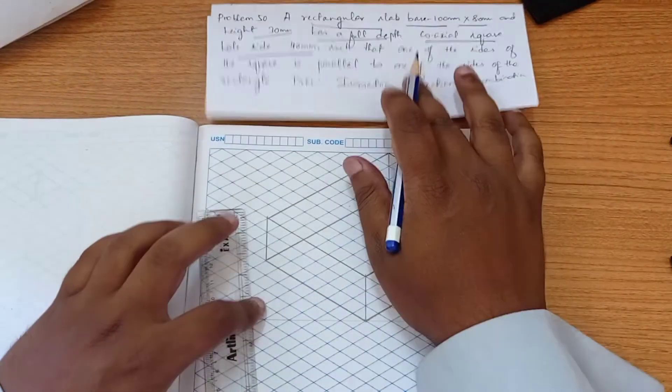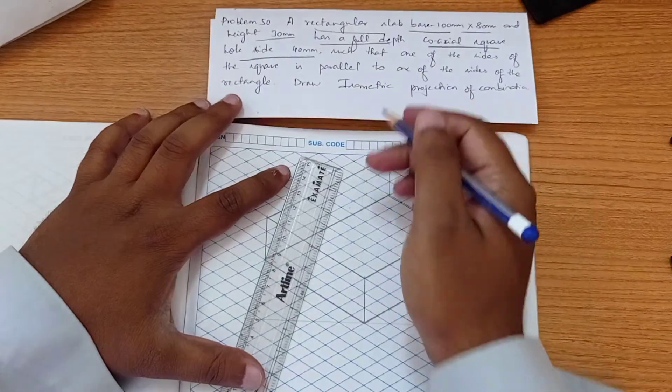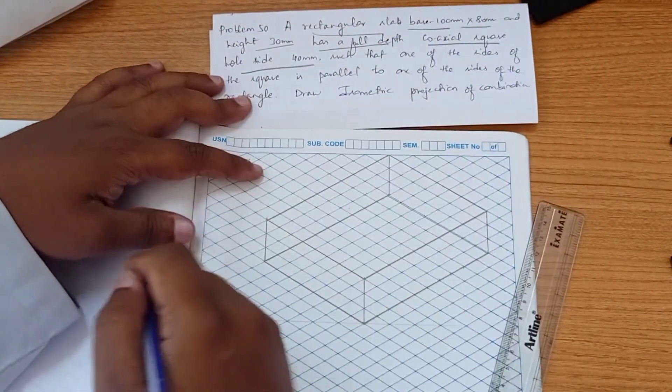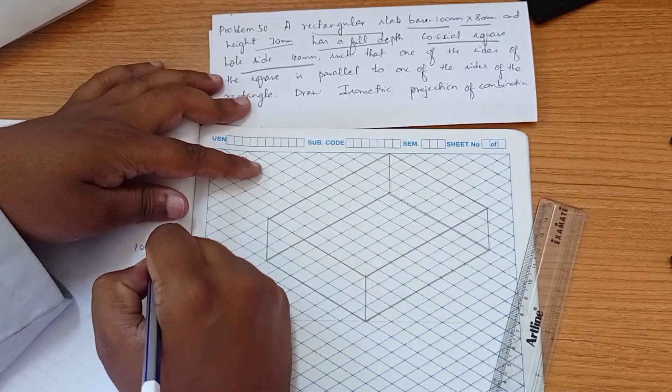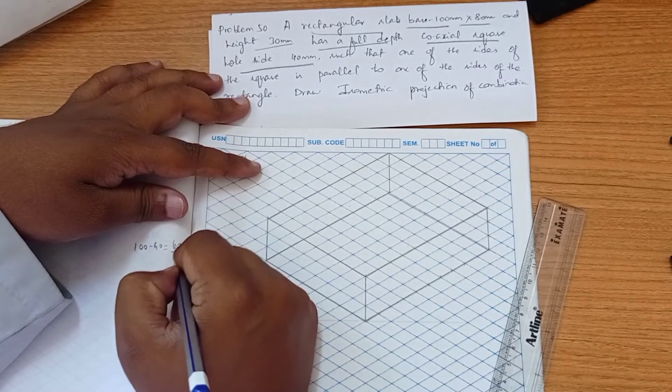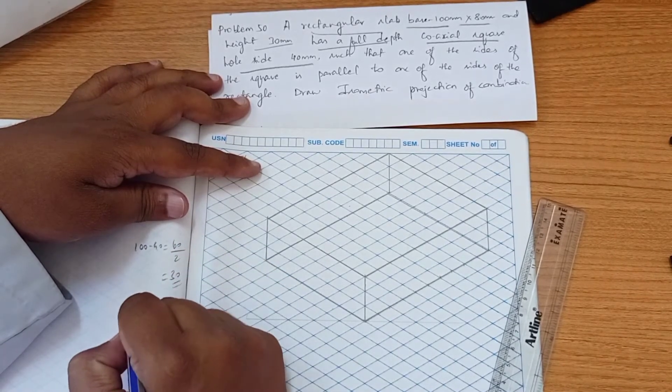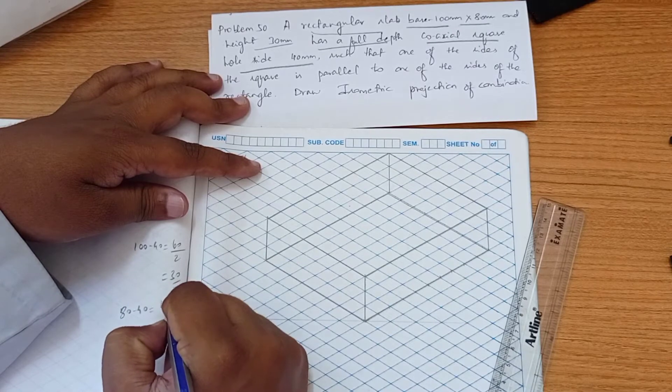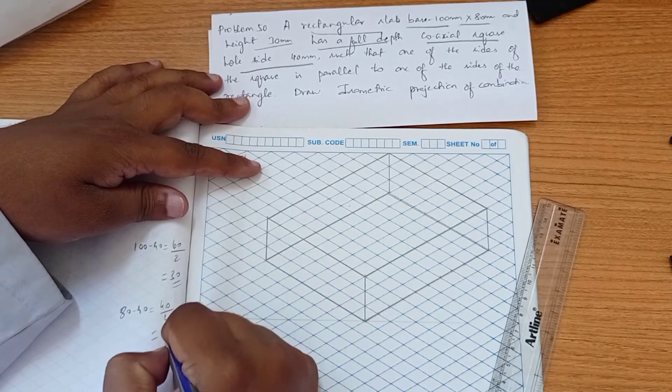Now we have to have a square hole of side 40. So we have 100, so 100 minus 40 is 60 divided by 2 means 30. And 80 minus 50 means 40, 40 divided by 2 means 20.